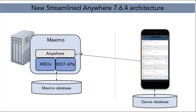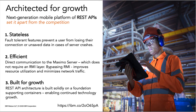This simplifies everything in terms of communication, serviceability, installs, builds, and deployments. The way we were able to attain this new architecture is that features and functionality we were previously reliant on in the middleware component, we've now built as new features within Maximo to enable that superior mobile experience. Another very critical part of the Maximo Anywhere architecture is our utilization of the REST APIs. Maximo Anywhere's use of REST APIs sets it apart from competition because our REST APIs are stateless, efficient, and built for growth.